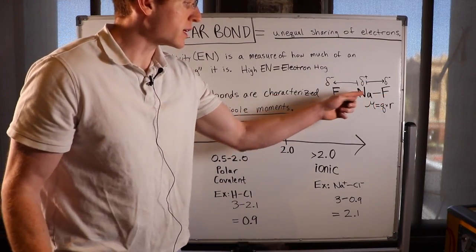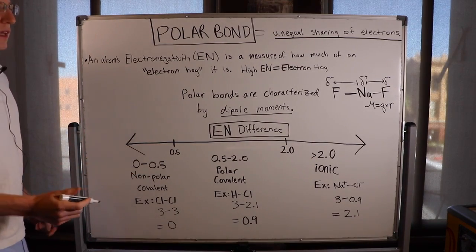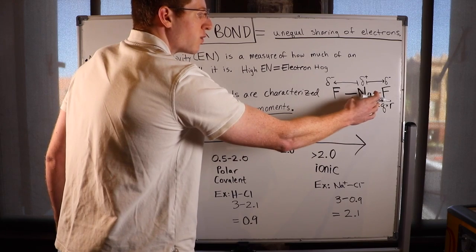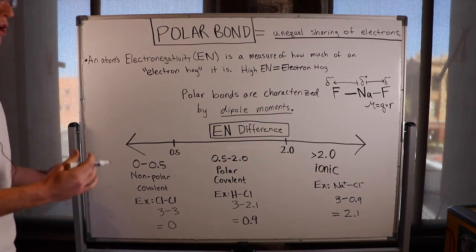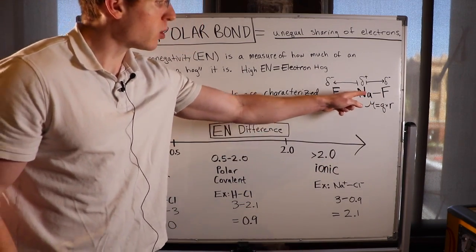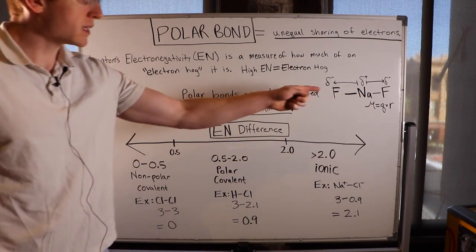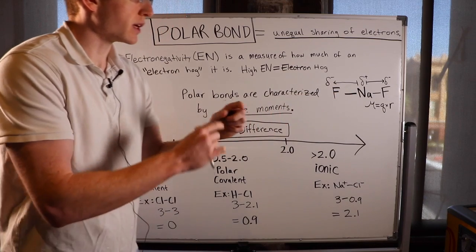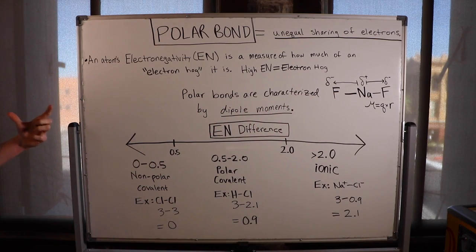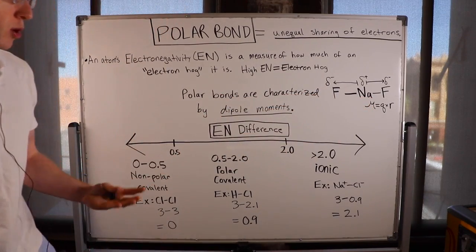If the two equal dipole moments cancel each other out, then NaF₂ would have an overall nonpolar character. You can have two very polar bonds within a molecule, but if they cancel each other out geometrically — pulling in exactly opposite directions — the overall molecule is nonpolar.